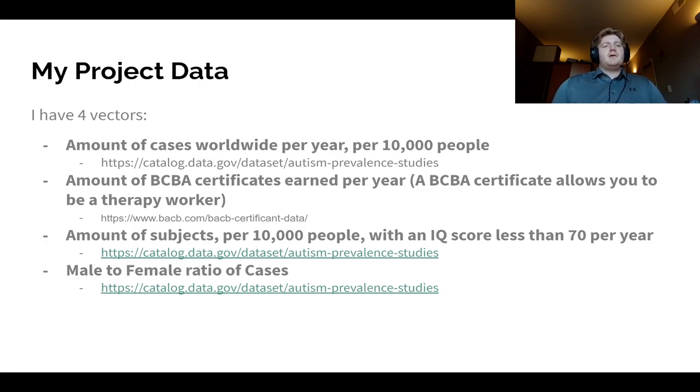So here is my project data. I currently have four vectors. I have the amount of cases worldwide per year, and then that's going to be per 10,000 people. I also have the amount of BCBA certificates earned per year. So a BCBA certificate allows you to be a therapy worker. And then I have the amount of subjects per 10,000 people with an IQ score less than 70 per year. And then I also have the male-to-female ratio of cases.